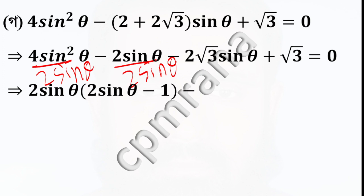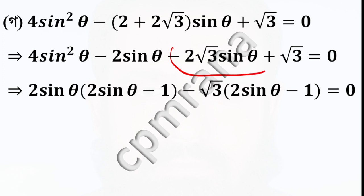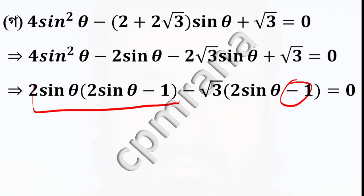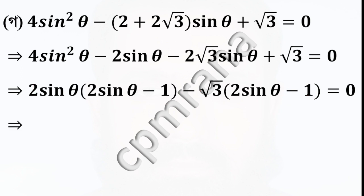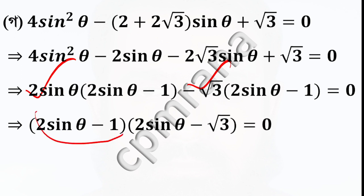So 2 sin theta is equal to our 2 sin theta. And that 2 sin theta is equal to 2 sin theta. Now we factor, which gives 2 sin theta, because 2 sin theta equals 1 sin theta minus 1. And 2 sin theta, minus root 3, is minus 1. So let us write 2 sin theta minus 1.